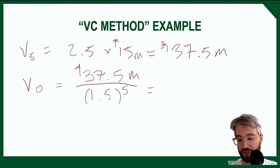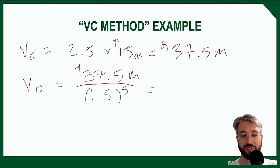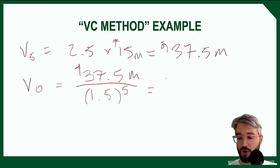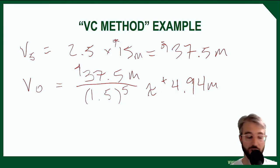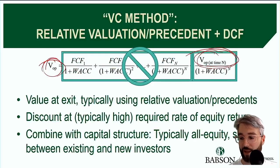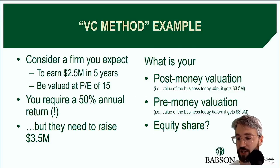So now I need to get my calculator out. I'm going to divide 37.5 by 1.5 raised to the fifth power — which I could also do using the built-in time value of money features in my calculator, where the numerator of 37.5 million is the future value, the discount rate of 50% is I, and N is the number of periods. When I do this, I get approximately a 4.94 million dollar post-money valuation today.